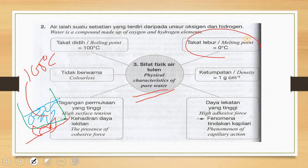The melting point — or freezing point — of pure water is 0 degrees Celsius. This means if you put it in the fridge and it reaches 0 degrees Celsius or below (negative 1, 2, 3, 4...), then it will freeze up. So the freezing point of pure water is 0 degrees Celsius, and its boiling point is 100 degrees Celsius.